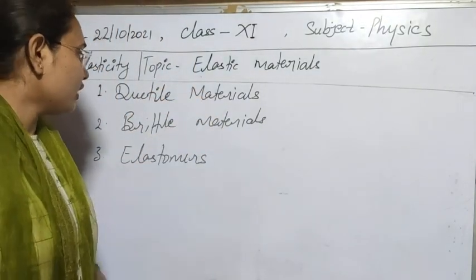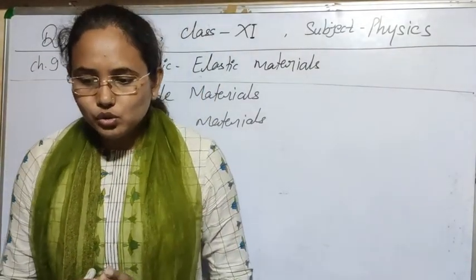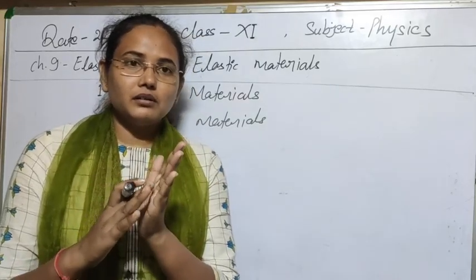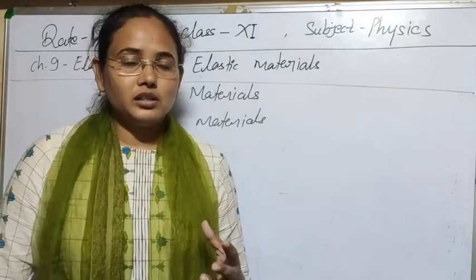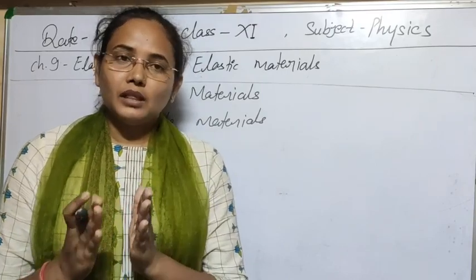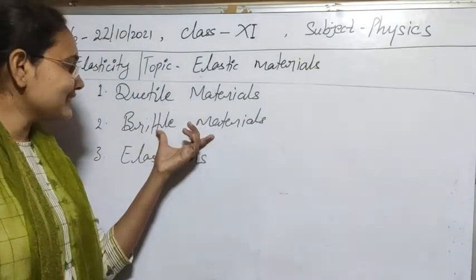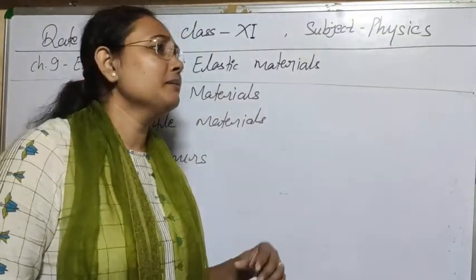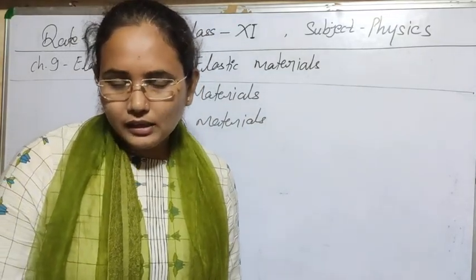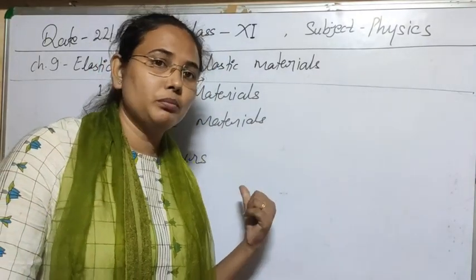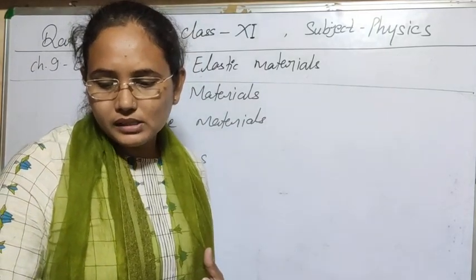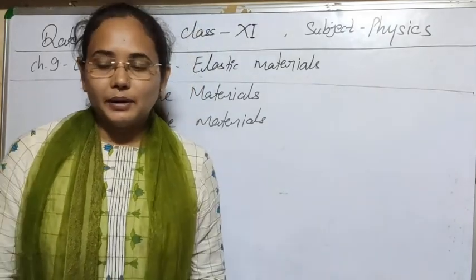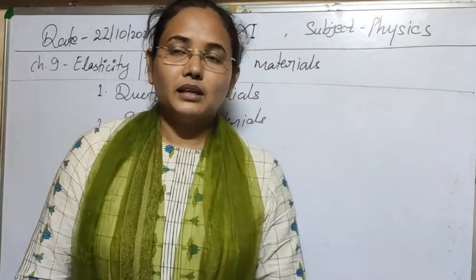The second type is brittle materials. These have a very small plastic range, so after the elastic limit, even a small additional stress causes them to break. Their breaking point and yield point are very close together, so they break easily under stress. We cannot use brittle materials to make sheets or springs. Examples include cast iron and glass — applying stress to glass breaks it easily.